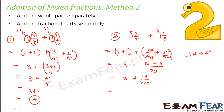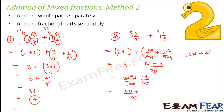Now we add 3 + 19/20. We treat 3 as 3/1, and find the LCM of 1 and 20, which is 20. Multiplying 3/1 by 20 gives 60/20, and 19/20 stays as 19/20. So 60 + 19 = 79, giving 79/20 as the final answer — the same result as Method 1.